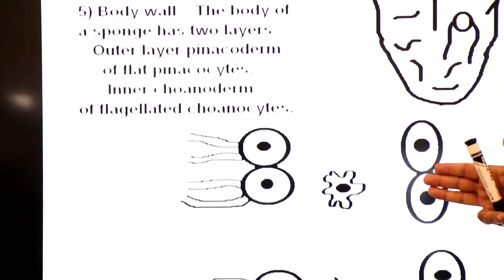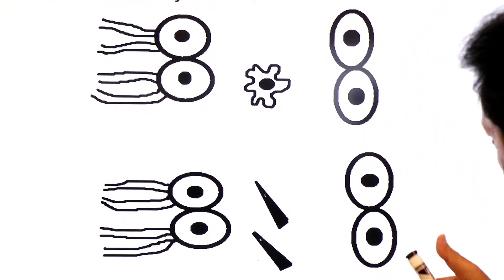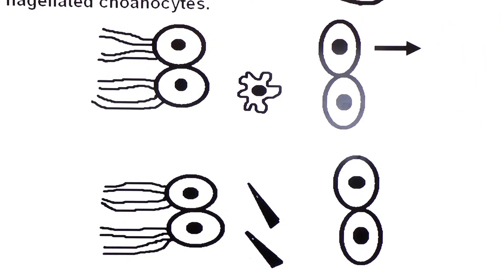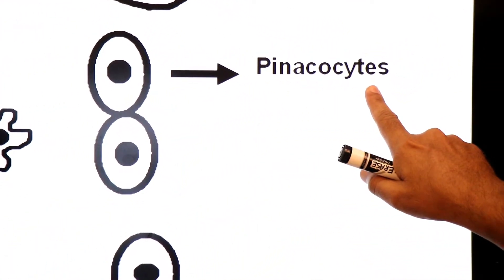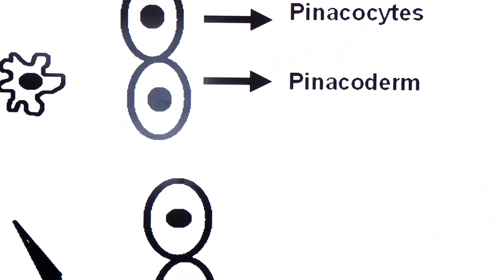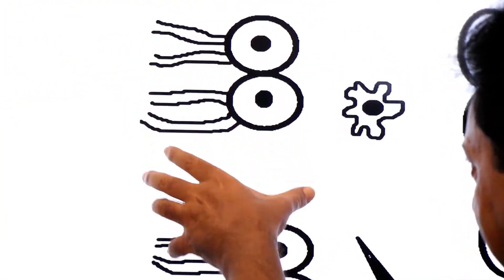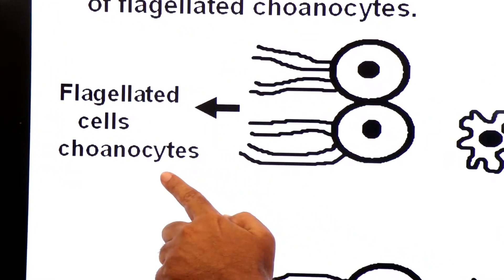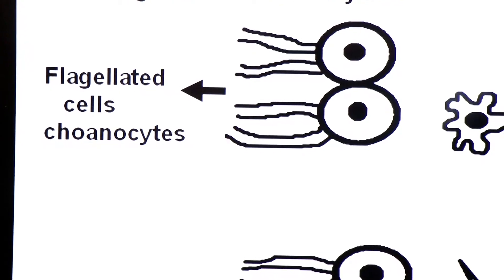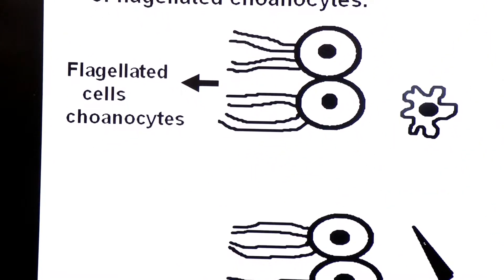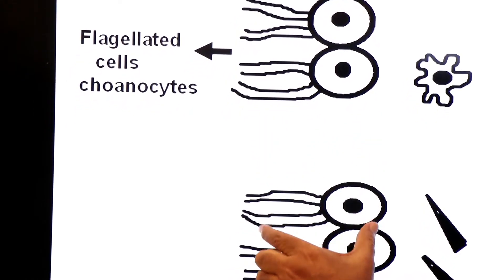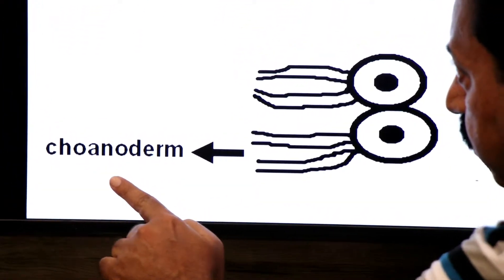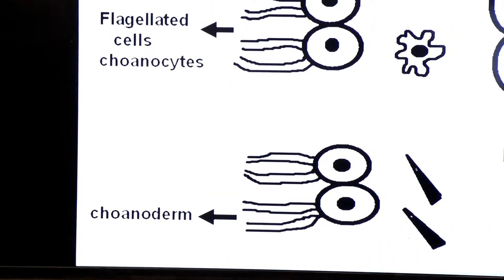Looking at the diagram: the outer layer is made up of cells called pinacocytes, that is why it is called pinacoderm. The inner layer is made up of flagellated cells called choanocytes — these are very important cells. The inner layer is called choanoderm because it is made up of flagellated cells, choanocytes.